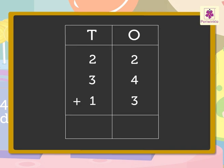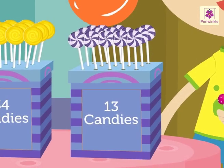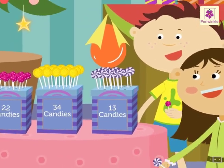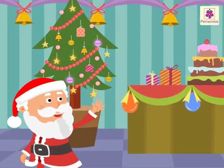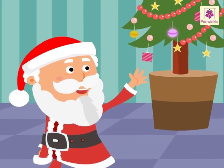We have to add 22, 34 and 13 to get the total number of candies. 2 plus 4 plus 3 is equal to 9. 2 plus 3 plus 1 is equal to 6. Thus, the sum of 22, 34 and 13 is 69. There are 69 yummy candies with Santa. Look, Santa is leaving. Let us say goodbye to him.